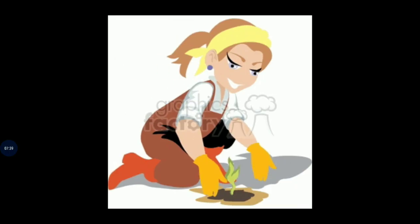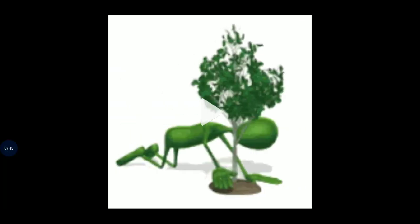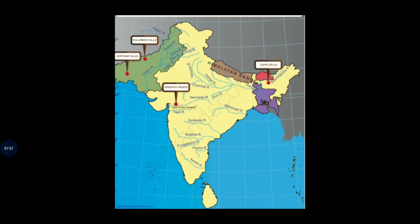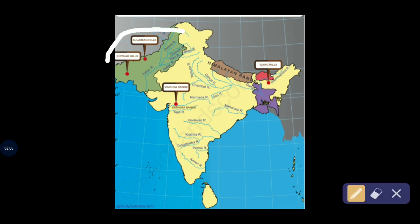After a long time, man came to learn the art of cultivation. Historians say that about 8,000 years ago, women and men first began to grow crops like wheat and barley on some areas of the Suleiman and Kirthar Hills to the northwest of India.